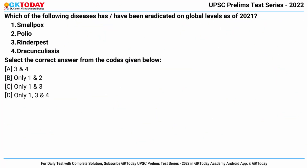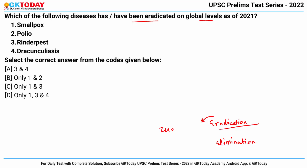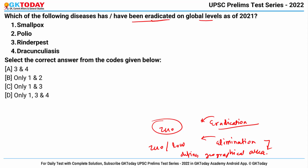Question four: which of the following diseases have been eradicated at the global level as of 2021? Note that eradication means complete and permanent worldwide reduction to zero new cases, while elimination means reduction to zero or a very low defined target rate in a defined geographical area. Smallpox is a viral disease caused by the variola virus, fatal in 30% of cases, and was officially declared eradicated in 1979 — this is correct.